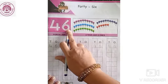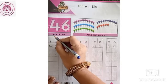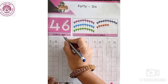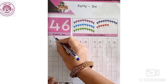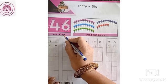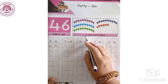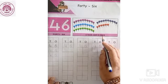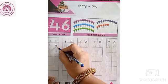Now, let's study number name of 46. 4, 10, and 6, 1. Repeat again. 4, 10, and 6, 1. We will write 4 in 10's column and 6 in 1's column.